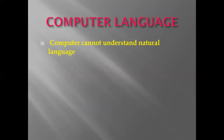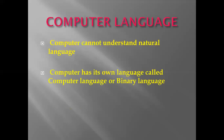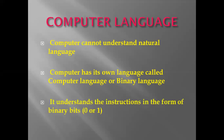Next, computer language. Computer language is different from natural language — it is the opposite of natural language. The computer can only understand computer language; it cannot understand the natural language we use in communication. The computer has its own language called computer language or binary language. The computer understands instructions in the form of binary words: 0 and 1. This concept of binary words is new, so just keep in mind that the computer can only understand the form of 0 and 1.